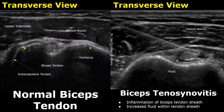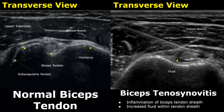Here is an image of a normal biceps tendon in transverse view — more specifically, the long head of the biceps tendon. It looks like a round hyperechoic structure. This is the humerus, over here is the subscapularis tendon, this is the lesser tuberosity, and up here is the deltoid muscle.